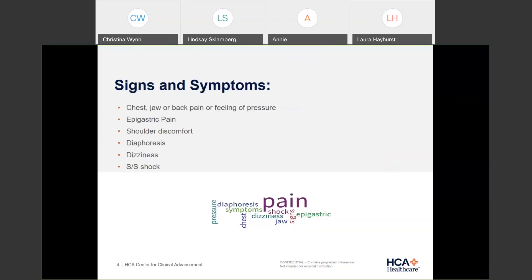Signs and symptoms of acute coronary syndrome include the typical chest, jaw, and back pain — that elephant sitting on their chest — epigastric pain, and shoulder discomfort. Patients with diabetes may also present. You'll see signs and symptoms of shock: unstable hemodynamics, and that gray cardiac 'I'm going to die' look. Once you've seen that gray skin color, you will never forget it. It is a cardiac sign.